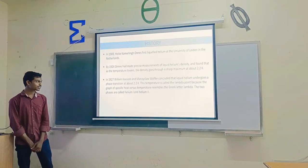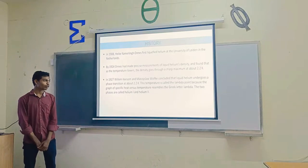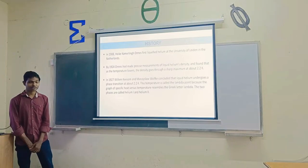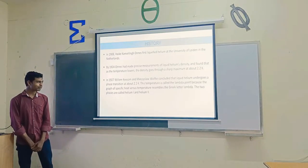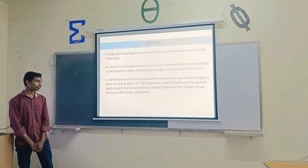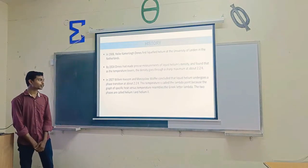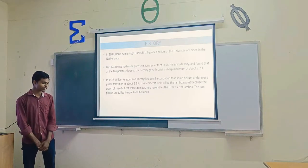In 1930, William Simpson and Mike Zylopoulski concluded that helium underwent a phase transition at above 2.2 Kelvin. This temperature is called the lambda point. The graph between specific heat and temperature has a shape called the Greek letter lambda. The two phases are called Helium-1 and Helium-2. Helium-1 is the normal liquid or normal fluid, and Helium-2 is the superfluid.